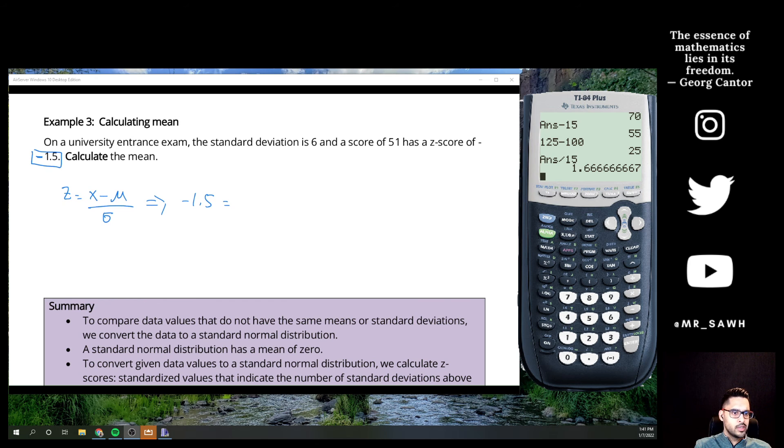So this time I know the z-score is negative 1.5. We'll put in everything else we know. So I know the specific mark is 51, that's what we're talking about. I don't know the average, but the standard deviation is 6. So if I go to solve this using everything I've learned, well I can multiply both sides by 6. So negative 1.5 multiplied by 6 will get you to negative 9. That equals to 51 minus your average. If you subtract 51 from both sides...